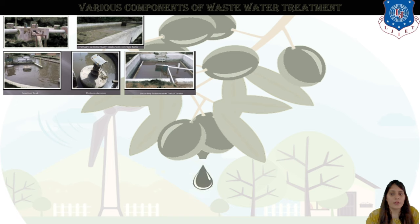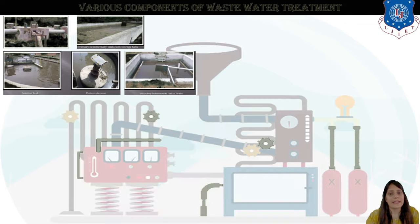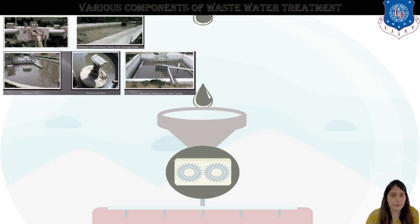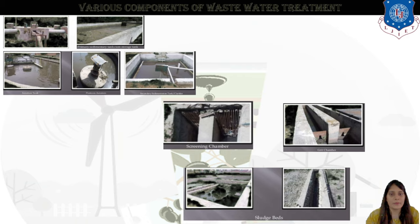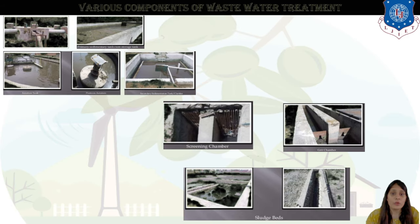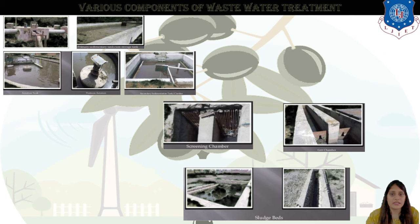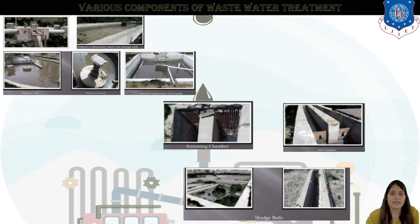Next you can see the pontoon aerators — these are aerators which are provided to the wastewater — and lastly it goes to the clarifier and the filter process. There is a screening process where screening chambers remove paper and hard materials. Then it goes to the grit chamber.